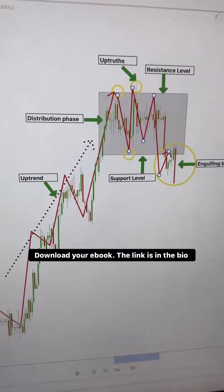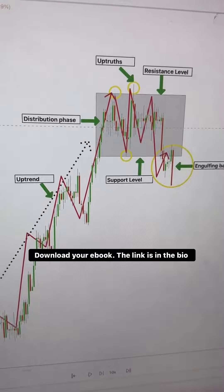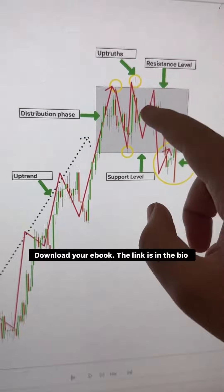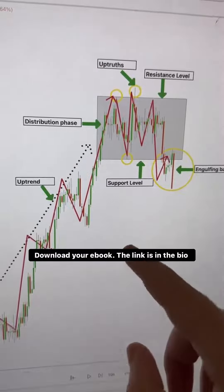Now how can you take advantage of this smart money manipulation? Here's a strategy to consider. Look for a range that occurs after an uptrend. This indicates a potential distribution phase.